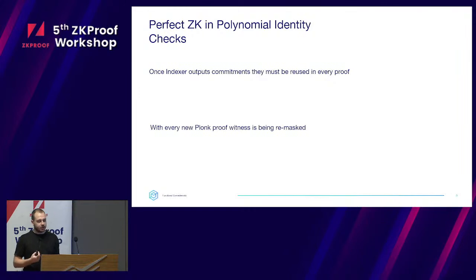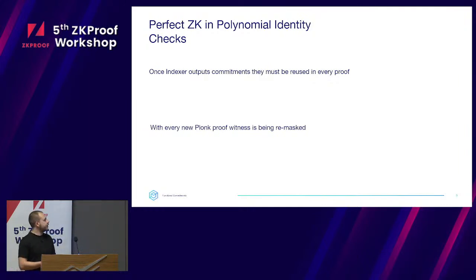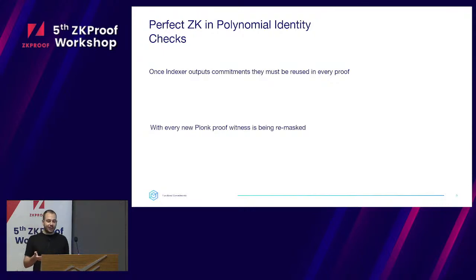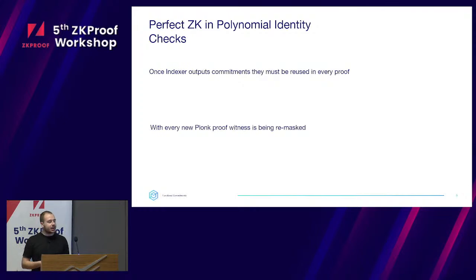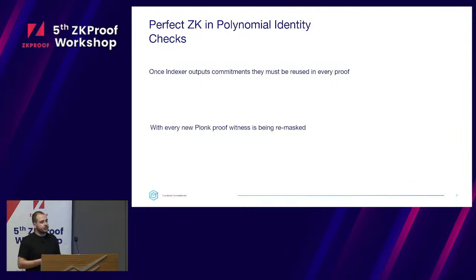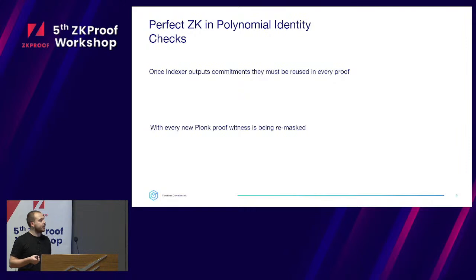We built a framework called Zero-over-K which allows you to work with polynomial identities of different types over different domains. We used it mainly to construct the proof of functional relations. It's very modular — since Plonk, Turbo Plonk, and Ultra Plonk can all be viewed as one large polynomial identity check, you can take assignments from Halo 2, ck-garage, or any other front-end framework, implement a few traits for your gates, and use Zero-over-K as a general Turbo/Ultra Plonk prover with full custom expression support.